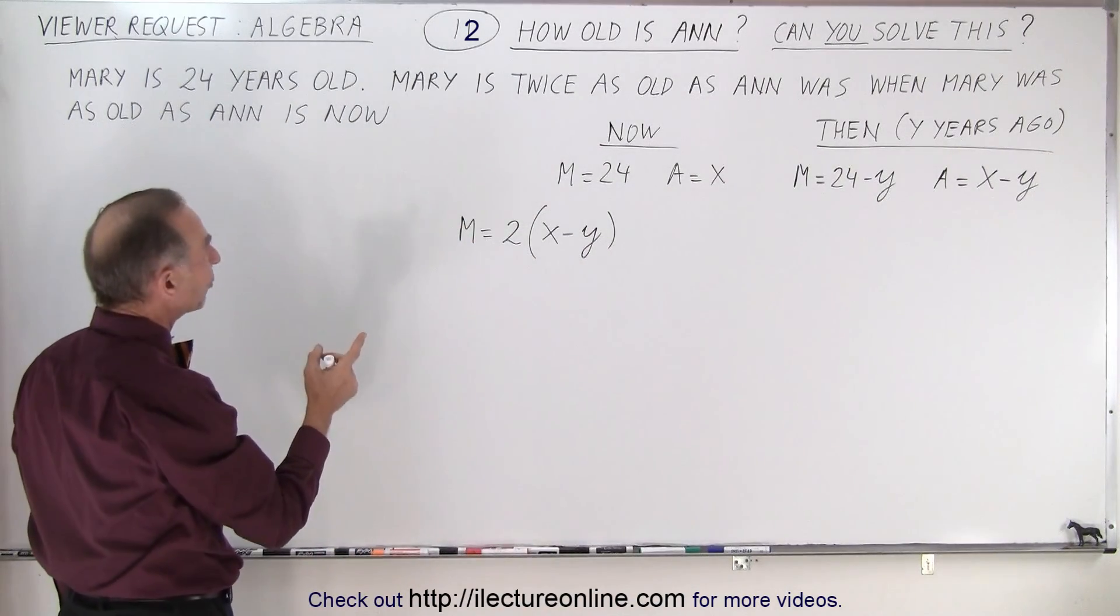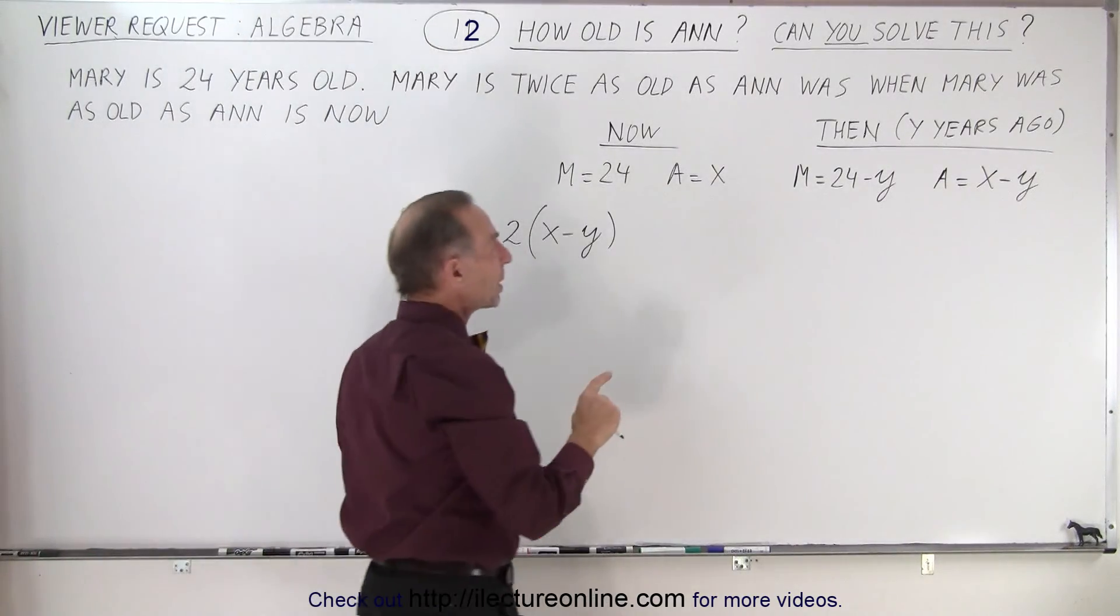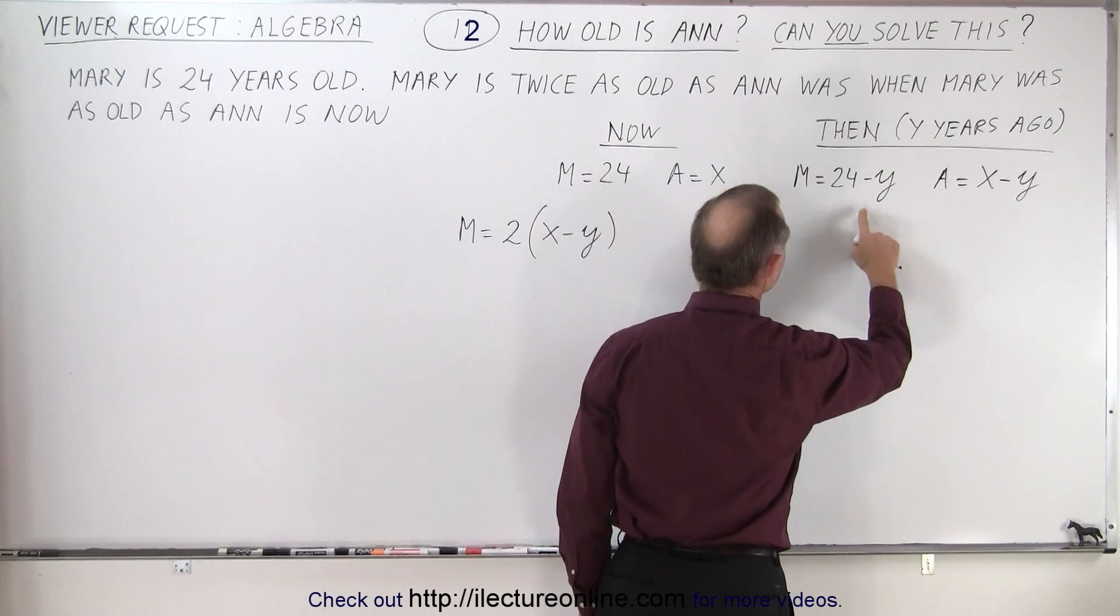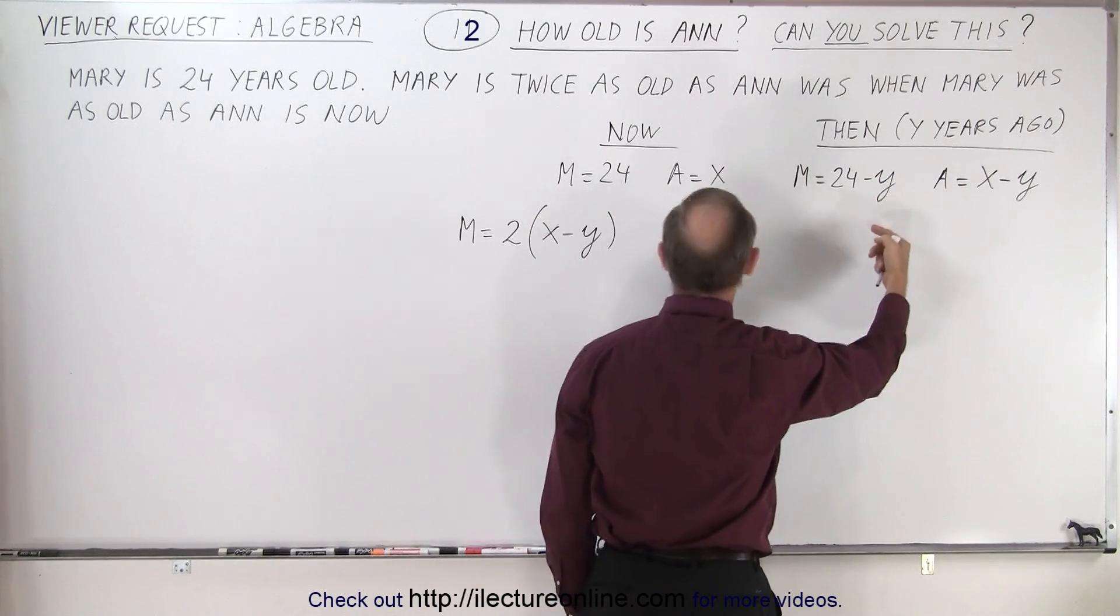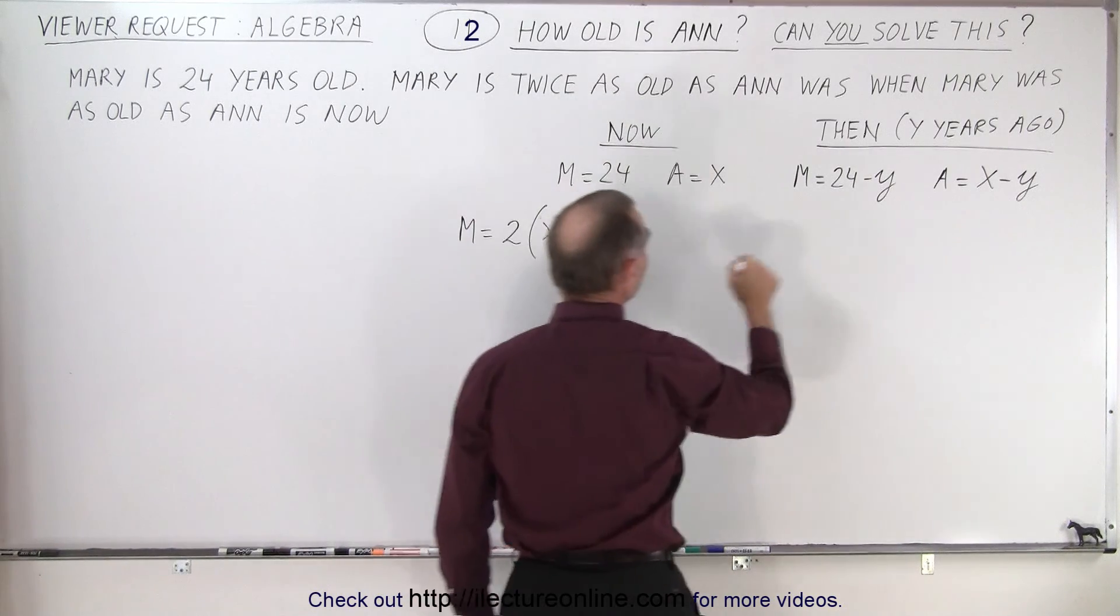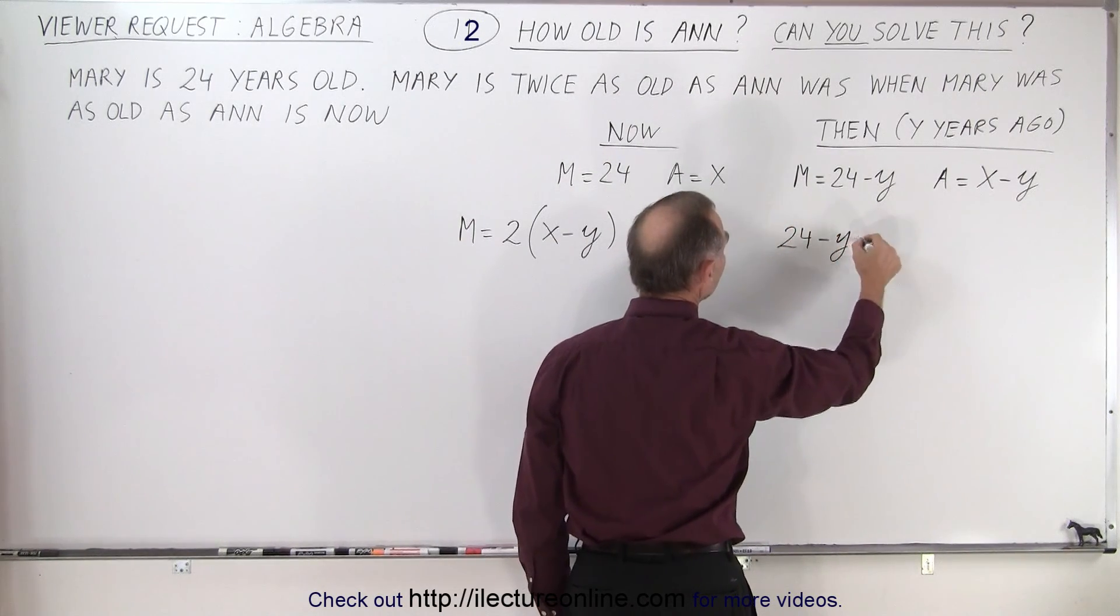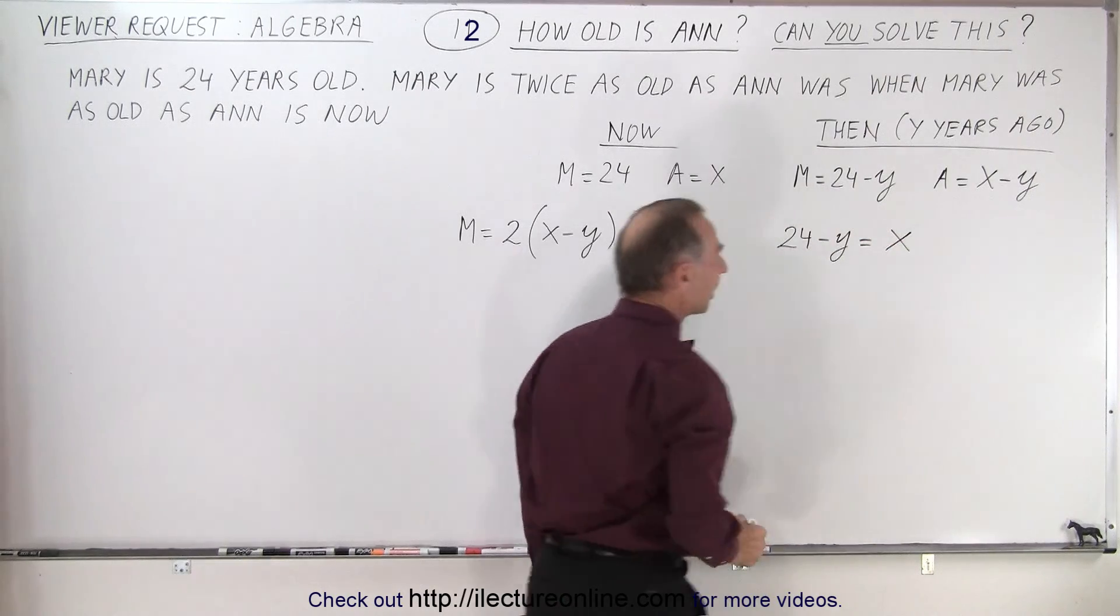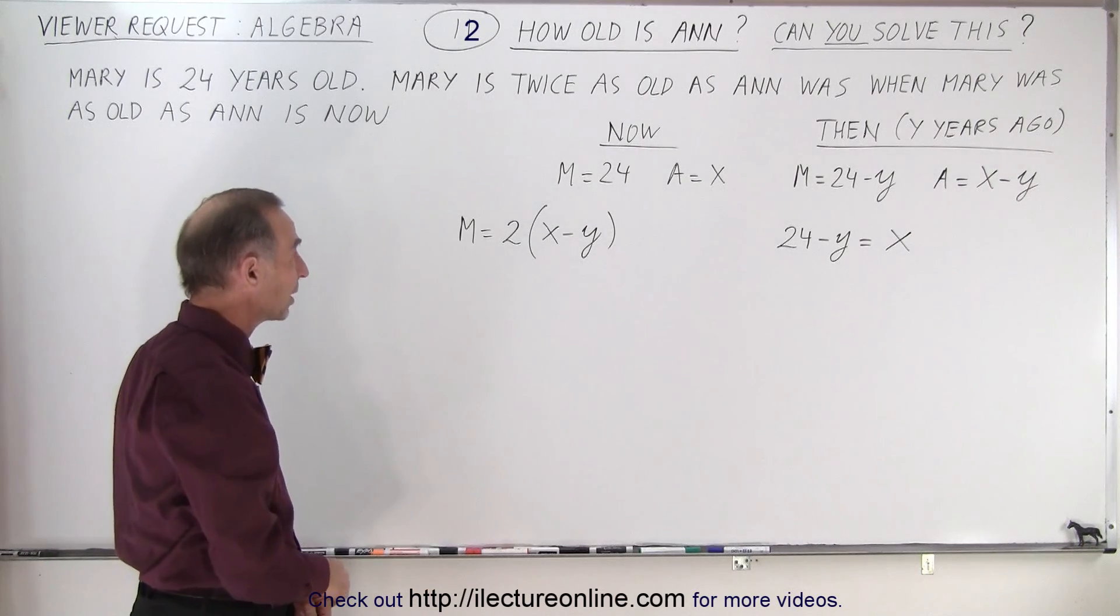Now it also says when Mary was as old as Anne is now. So Mary back then, which is 24 minus Y, is as old as Anne is now. So then we can say that Mary's age 24 minus Y is equal to the age of Anne today. So now we have two equations and two unknowns so we can solve them simultaneously.